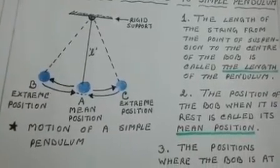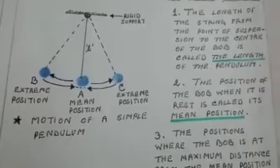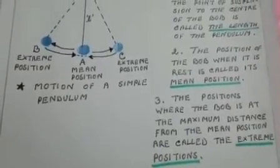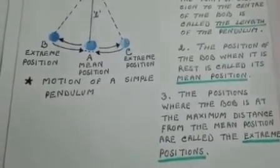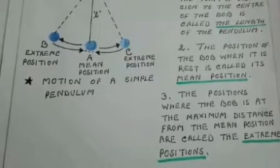The position of the bob when it is at rest is called its mean position. In the figure, the position A is the mean position of the bob.